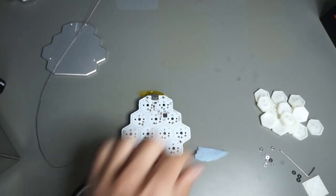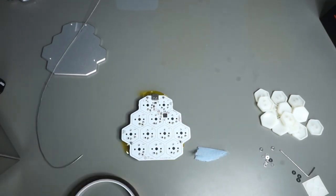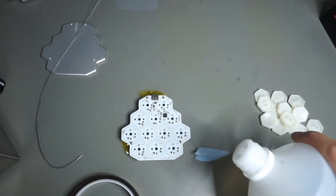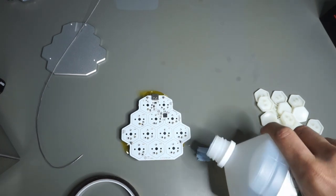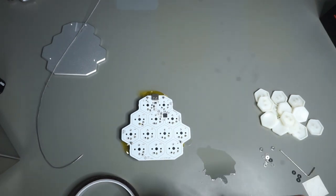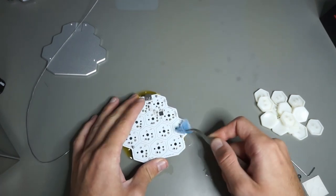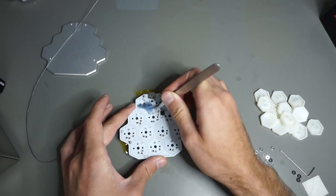Depending on the solder that you've used you might want to clean the PCB of any flux residue. Here I'm using just some paper towels and isopropanol alcohol to just wipe off any flux residue from the board.